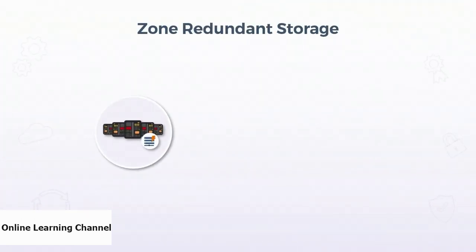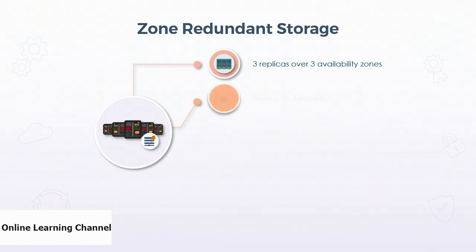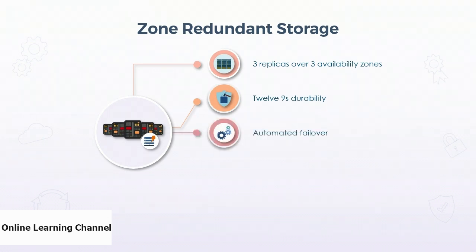Zone redundant storage expands on the locally redundant storage pattern. Data is replicated three times across three availability zones within the region — each an independent data center with its own power supply, cooling equipment, and networking. Zone redundant storage offers 12 nines of durability over the course of a year. If a zone fails, Azure will automatically failover to the next zone, repointing DNS entries. Your application should support retries and back-off as the failover process is happening to enable resuming operations after the process is complete.